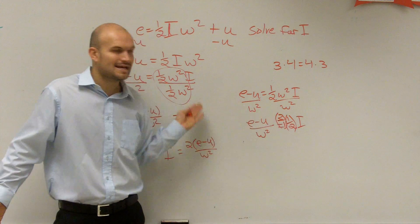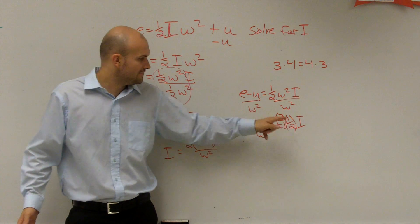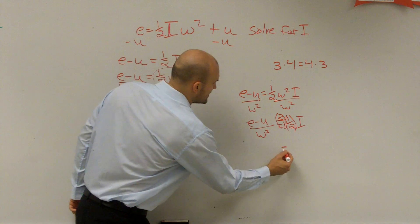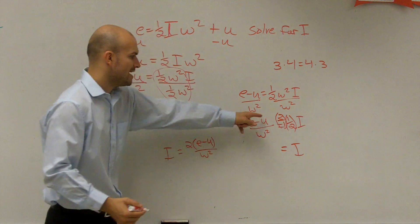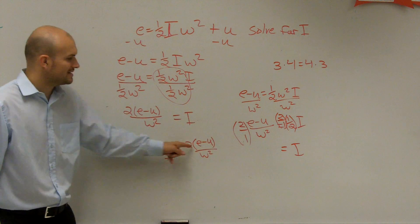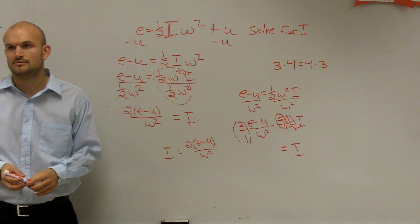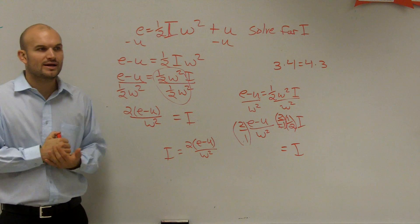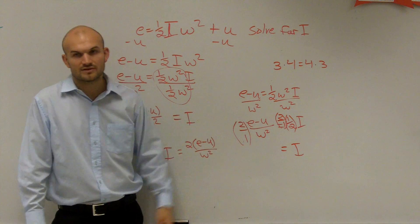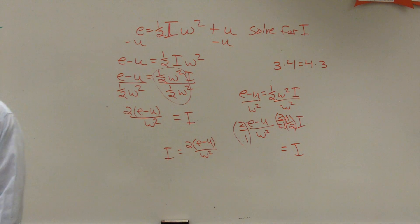So that's the same thing, but this is another way to think about it. If you have a fraction multiplied by its reciprocal, it goes to one, leaving us just with i. Then when I multiply this by two over one, you guys will see I'm going to get the exact same answer. It's just different ways to solve it, but you're going to get the exact same answer. i equals two times e minus u divided by w squared. There you go.